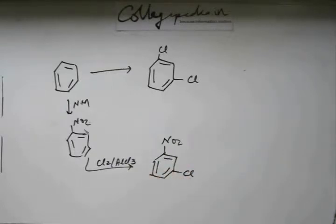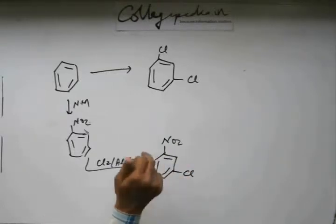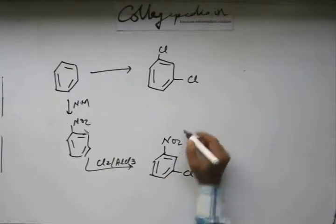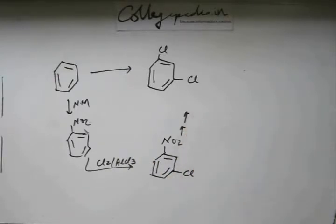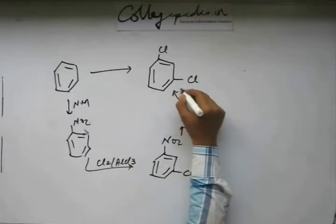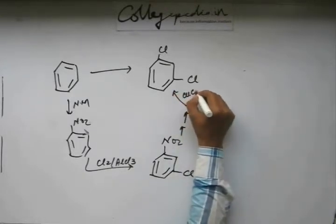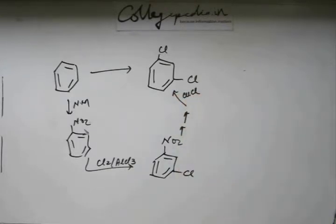Now the job is to convert this nitro into chlorine. Convert this nitro into an amine - step 1. Convert that amine into a diazonium salt - step 2. Add CuCl to that diazonium salt, and that is going to give you a chlorine instead of the diazonium group - giving you 1,3-dichlorobenzene. Easy.